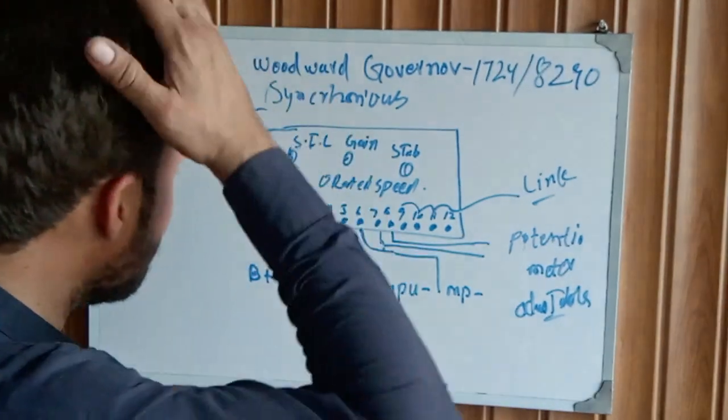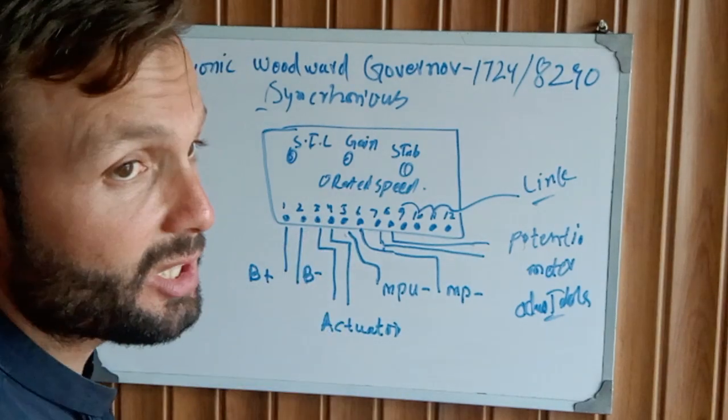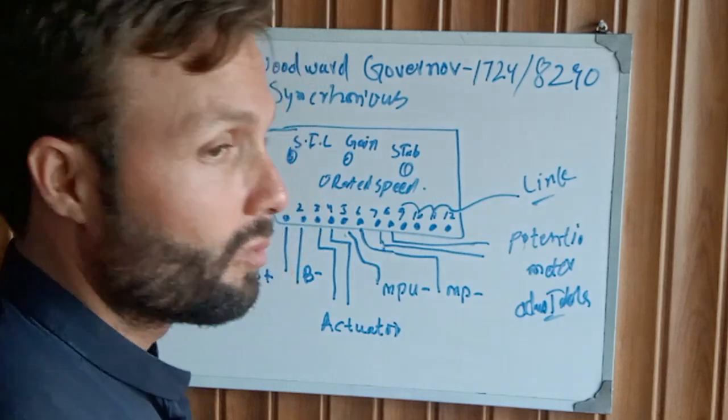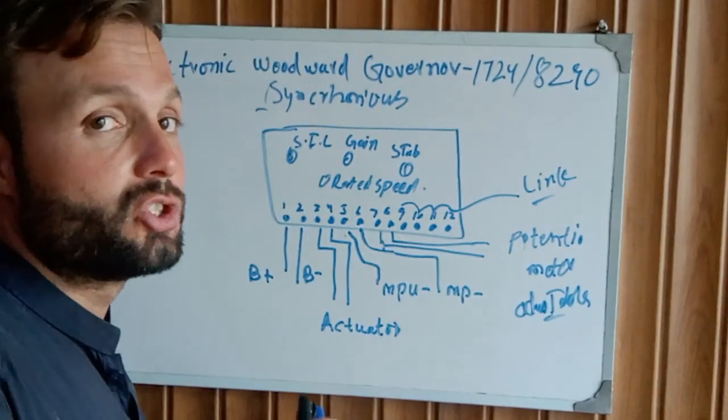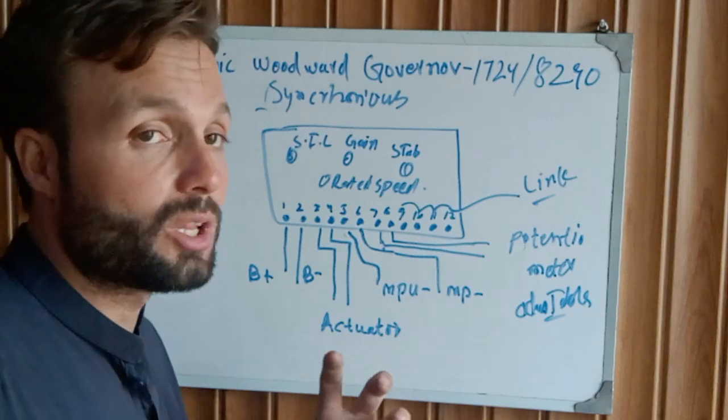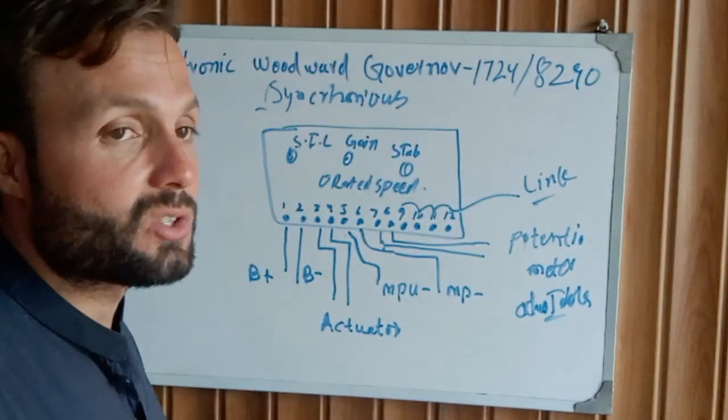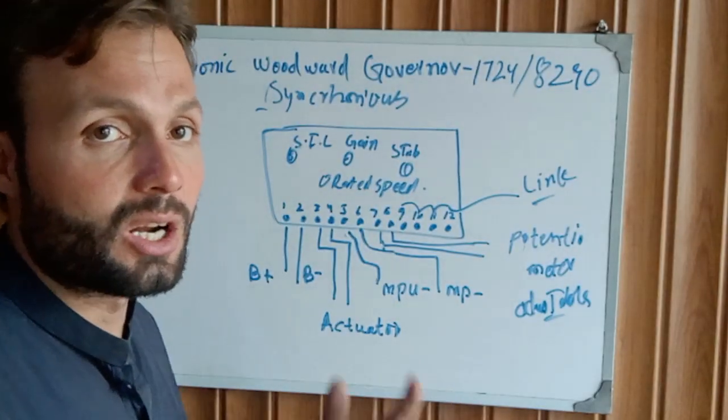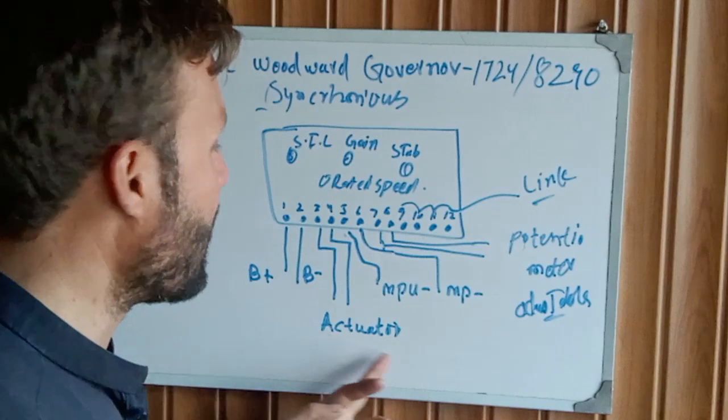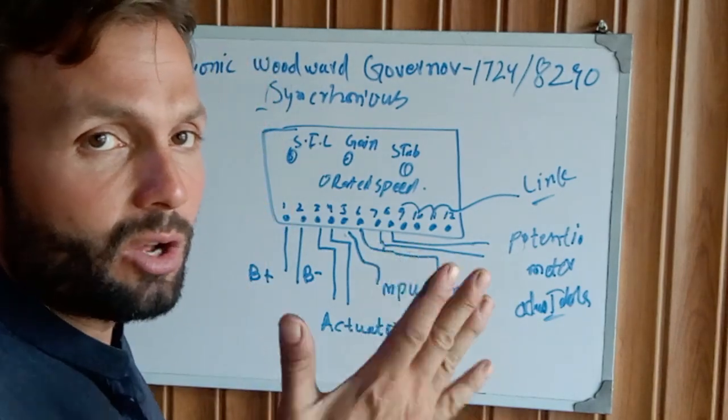Let's move to the other terminals. Terminals 3 and 4 are activator supply. The activator is mounted on the generator fuel pump which controls the generator fuel system. Some activators are installed internally, some externally, but the supply is the same.